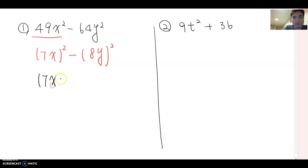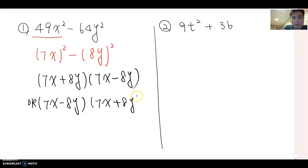(7x)² is correct. The second term becomes (8y)². Now we have the a² - b² form, so we're ready to factor. This becomes (7x + 8y)(7x - 8y). Again, even if you write (7x - 8y)(7x + 8y), that's also a correct answer.